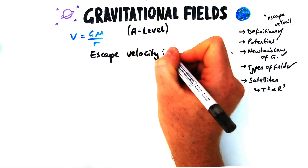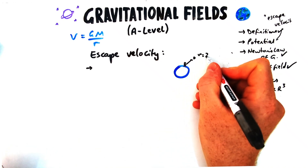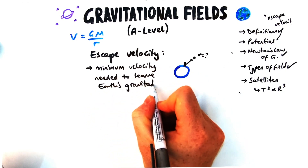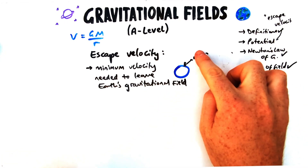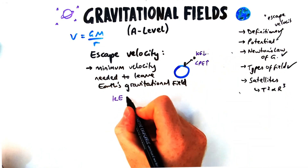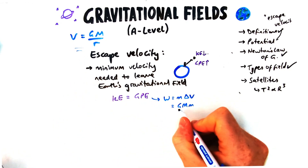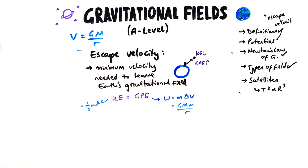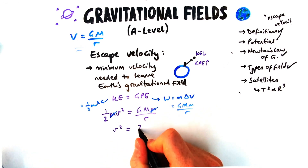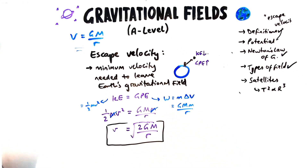Let's finish off with two derivations. First, escape velocity: if I'm standing on a planet and throw an object, what is the minimum velocity needed for it to escape the gravitational field — i.e., when g would equal zero? We think about energy: as it's thrown up, it loses kinetic energy and gains gravitational potential energy. Assuming no air resistance, however much kinetic energy it loses, it gains as gravitational PE.